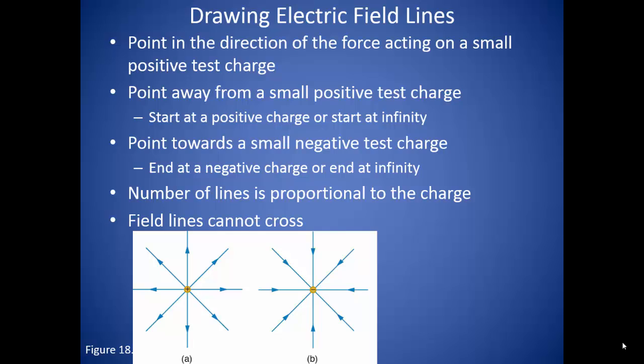When the small positive test charge is put into an electric field being produced by a positive charge, those field lines are going to act away from the positive charge. This means that the force is acting to push that small positive test charge away from the positive charge in the center.